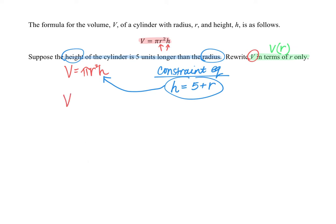So instead of V equals π r squared times h, now we have V equals π r squared times the quantity 5 plus r that we are substituting in place of h.